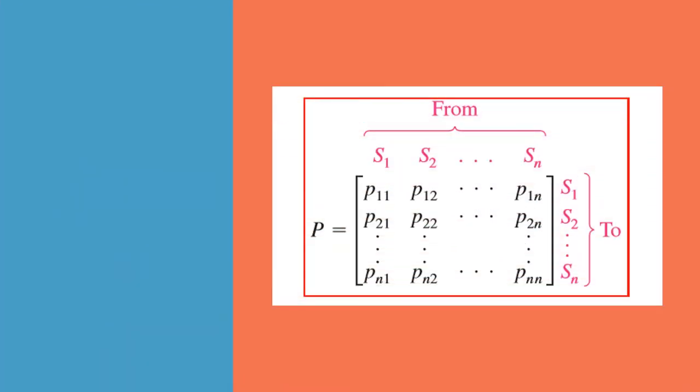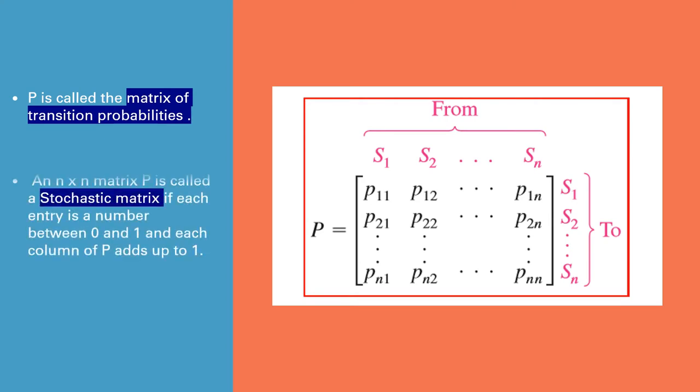The probability model will look like this. PIJ is the probability, and P is called the matrix of transition probabilities, and this n by n matrix is called a stochastic matrix.